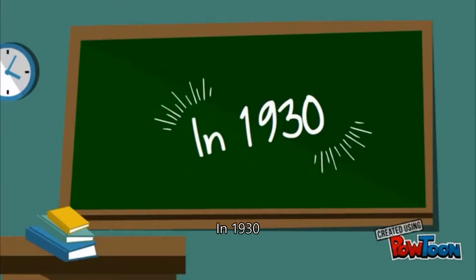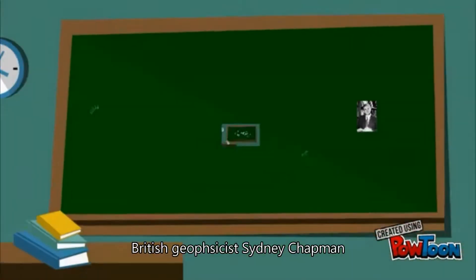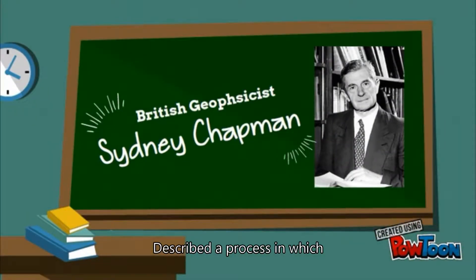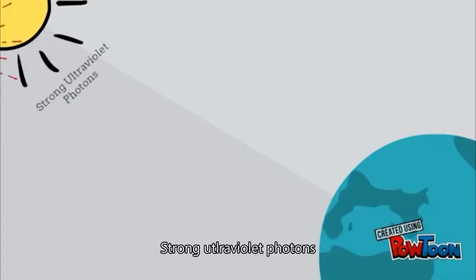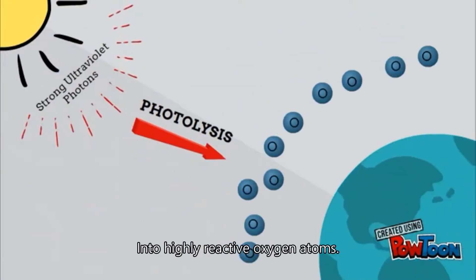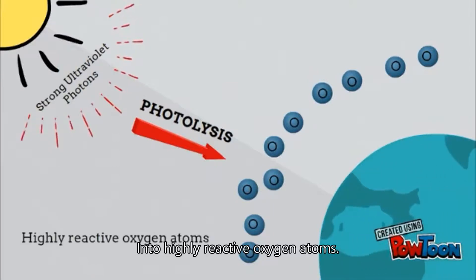In 1930, British geophysicist Sidney Chapman described a process in which strong ultraviolet photons photolyzed oxygen molecules into highly reactive oxygen atoms.